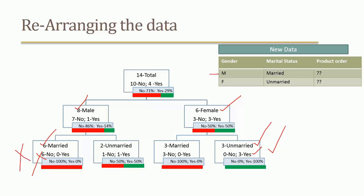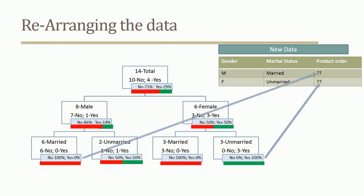When new data asks: if a customer is male and married, historically 100% of the time they did not order — so we predict they will not order. If female and unmarried, 100% of the time they ordered — so we predict they will order. This new data point belongs to the male-married segment; this one belongs to the female-unmarried segment.